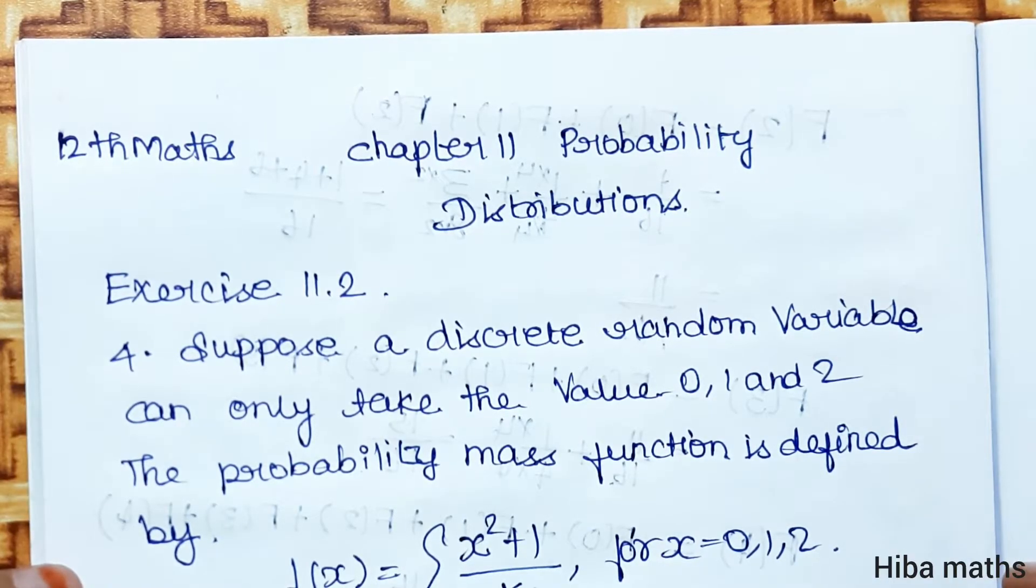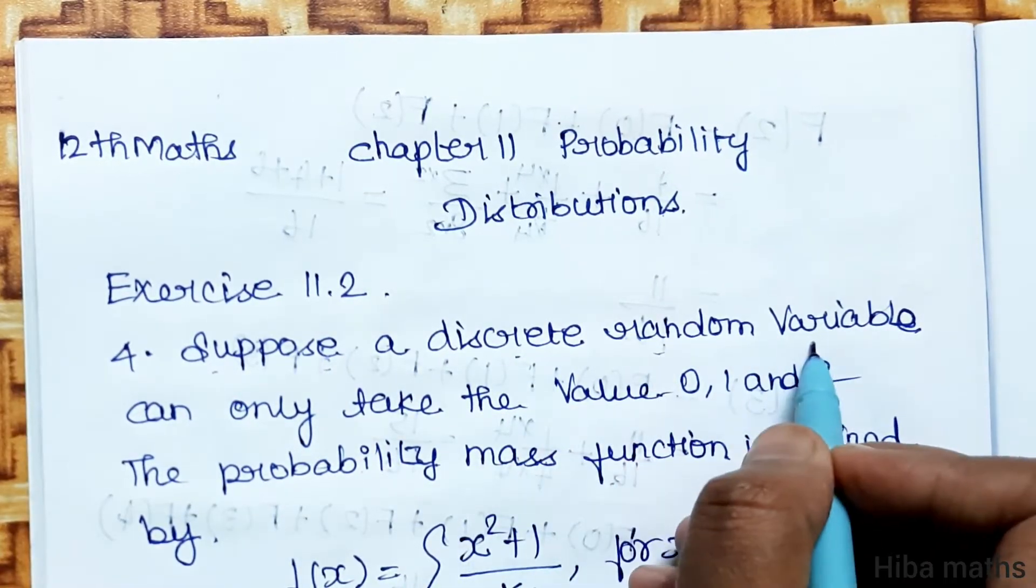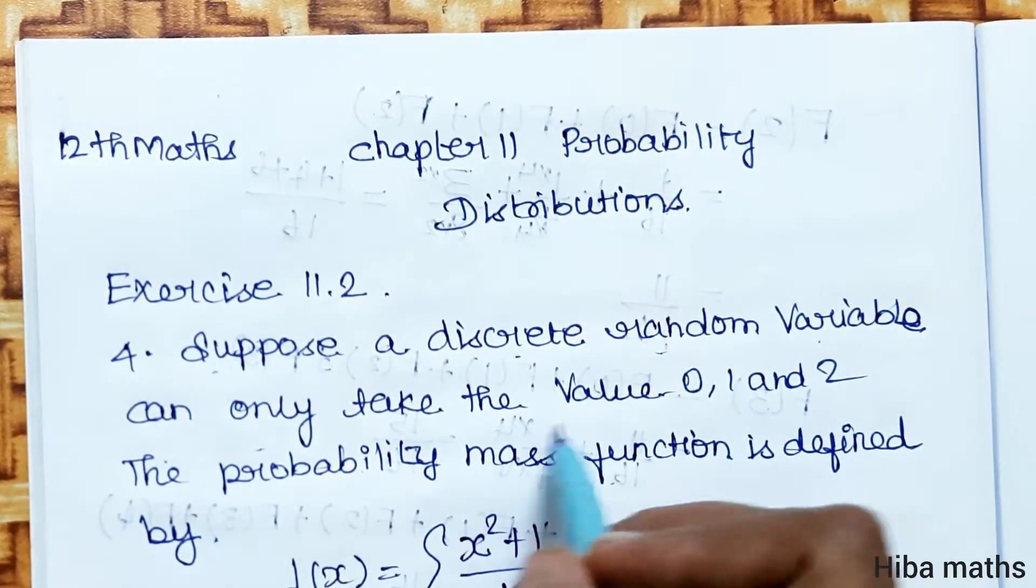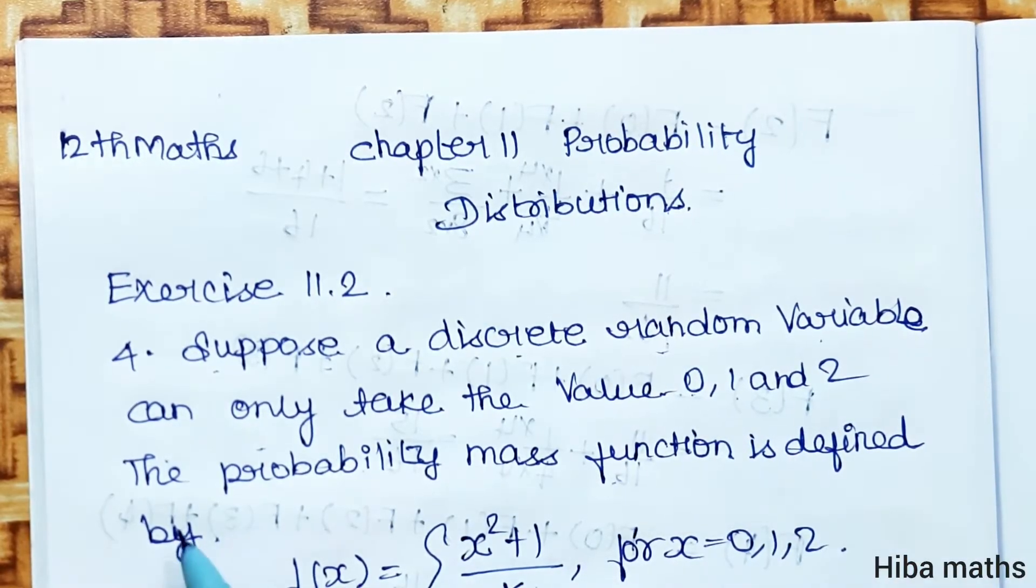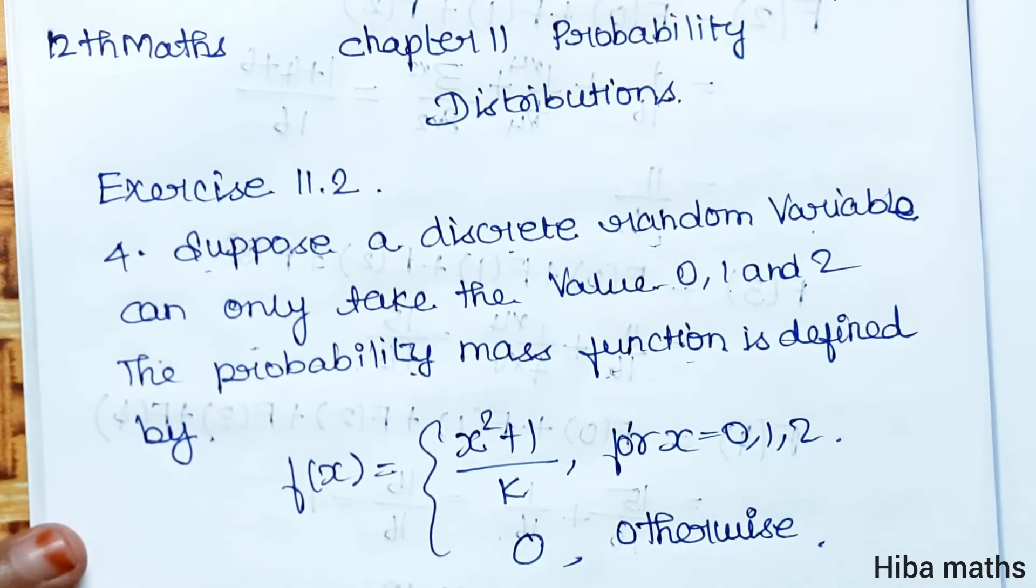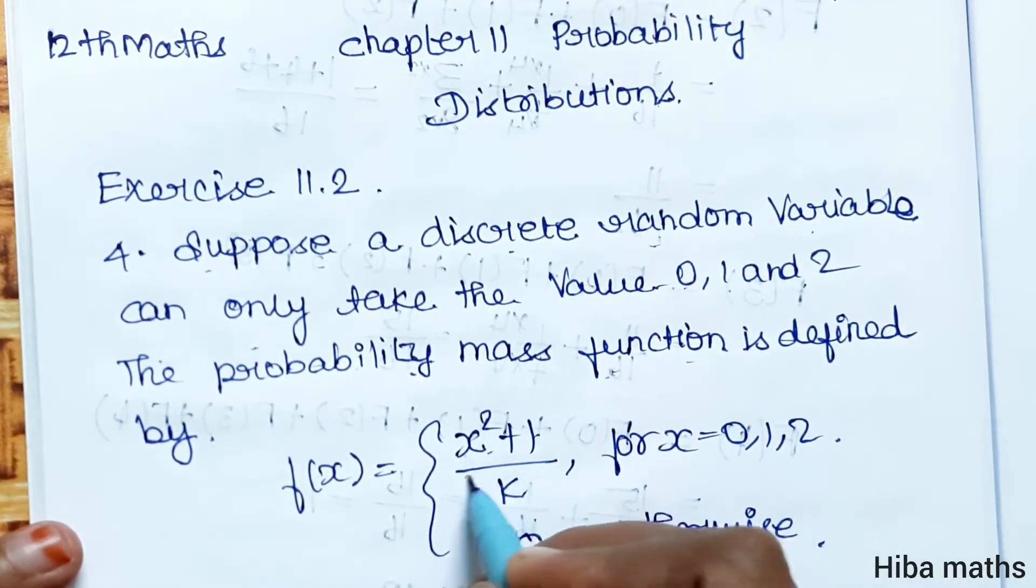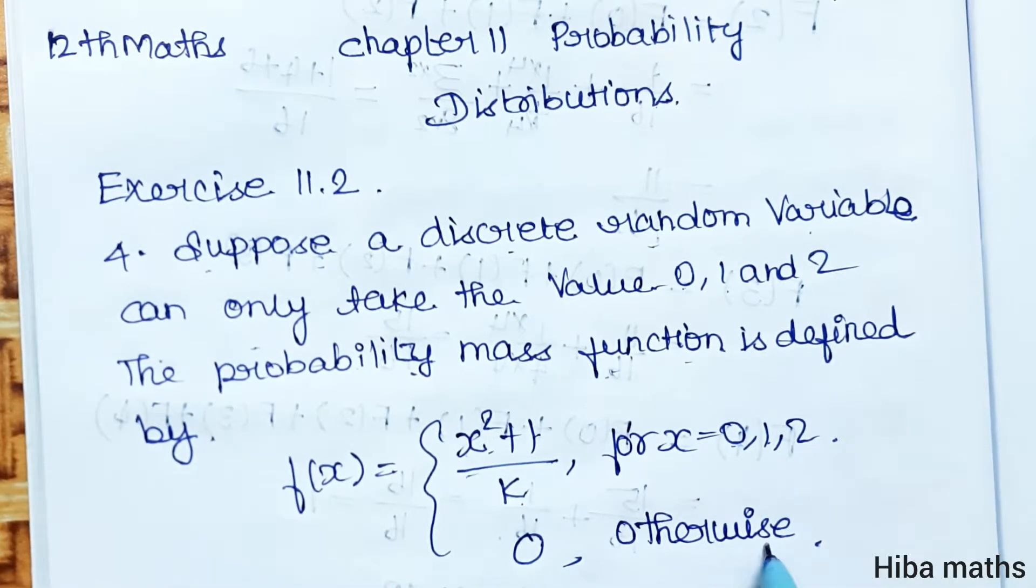Exercise 11.2, 4th question. Suppose a discrete random variable can only take the values 0, 1, and 2. The probability mass function is defined by f(x) = (x² + 1)/k for x = 0, 1, and 2, and otherwise 0.